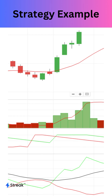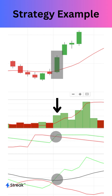I'll take a long position whenever the close price crosses above the EMA21, Aroon up is higher than Aroon down, ADX is higher than 24, and volume is higher than the moving average of the volume on the daily time frame. Exit will be based on 10% stop loss and 30% target.